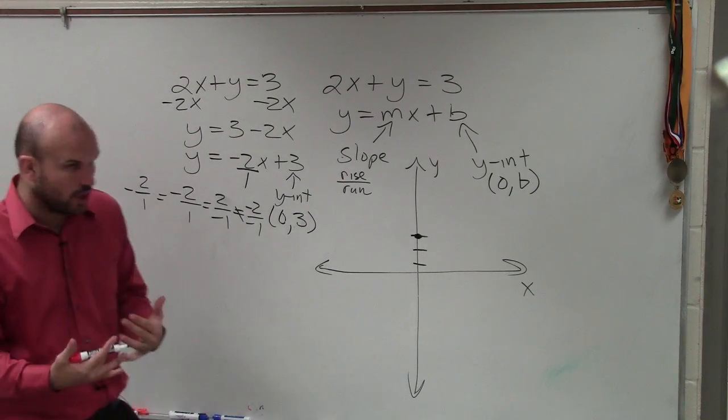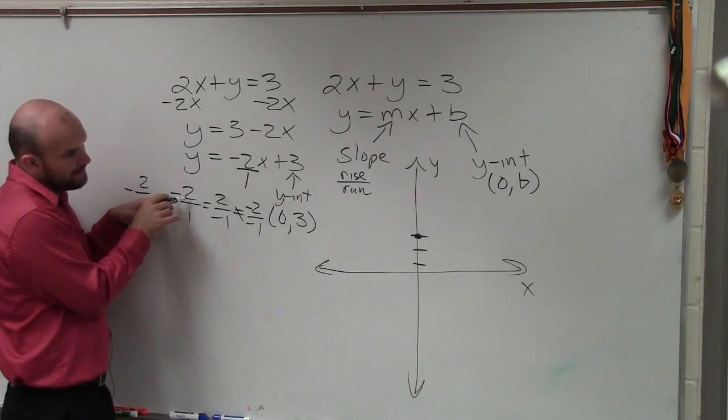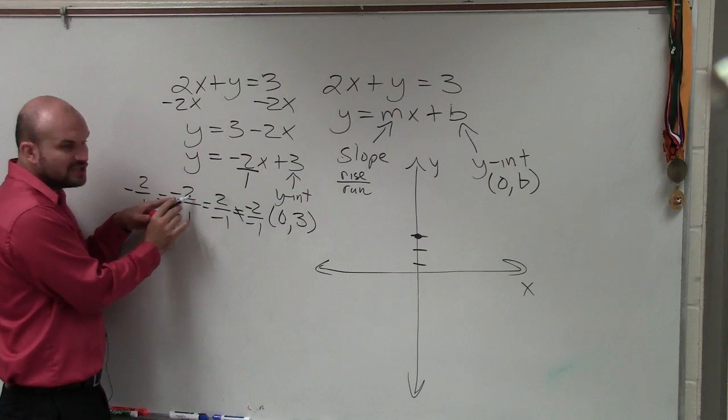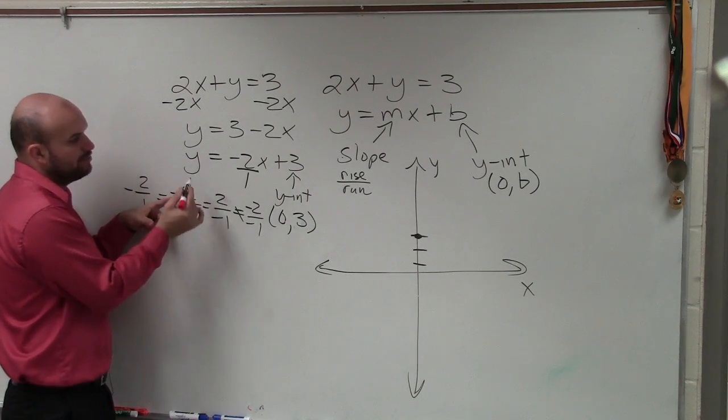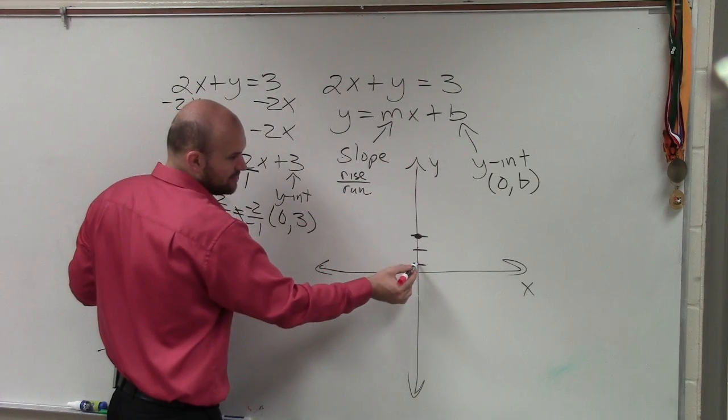Now, as far as dealing with the slope, what you're going to do is remember this is, once you choose where you want your negative to be, either top or the bottom, this is the change in the y-coordinates. The change in the y-coordinates between any two points is negative 2. So y-coordinates is up and down. So I'm going to go down two units.